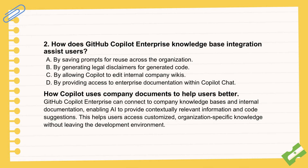But what about the other way around — using all the valuable internal stuff a company already has, like internal docs and coding standards? Think about a big company with tons of internal libraries and specific ways of doing things. A new developer starts — how do they get Copilot to understand that specific world? This is where enterprise knowledge base integration comes in. It lets Copilot Chat connect directly to a company's own internal documentation and knowledge bases, so users get suggestions relevant to their company's context, their internal APIs, even their specific coding policies. It basically turns Copilot from a general helper into an expert on that specific company.